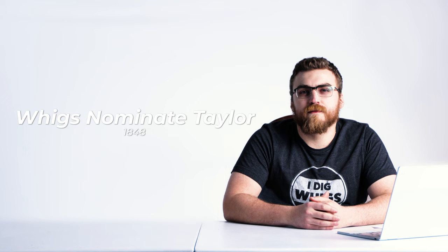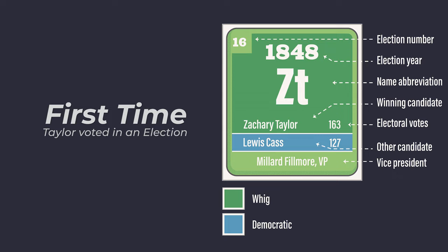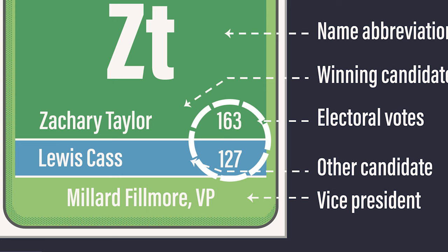The election pitted Zachary Taylor against Democratic candidate Louis Cass. The 1848 election was the first time Zachary Taylor ever voted in an election, and he defeated Louis Cass 163 electoral votes to 127.